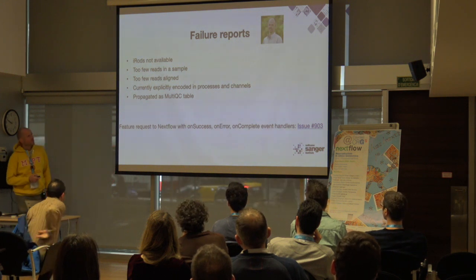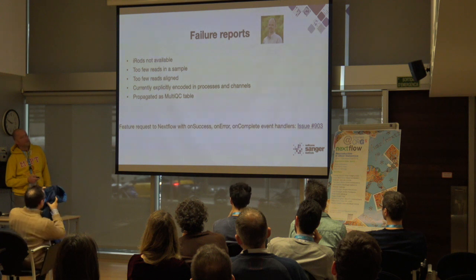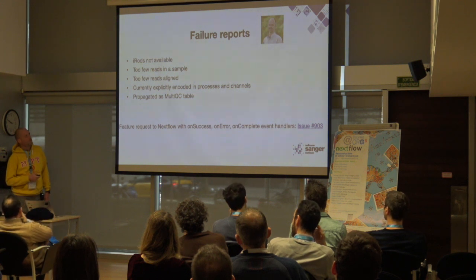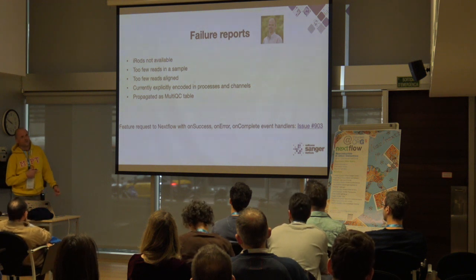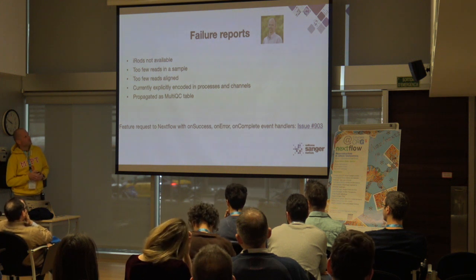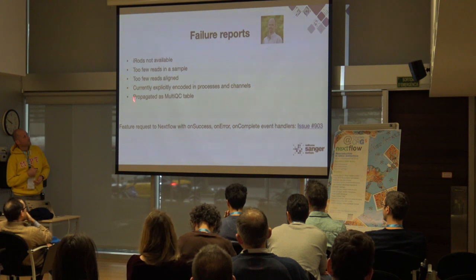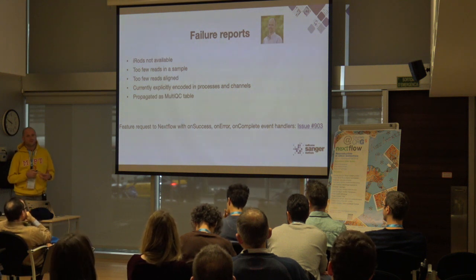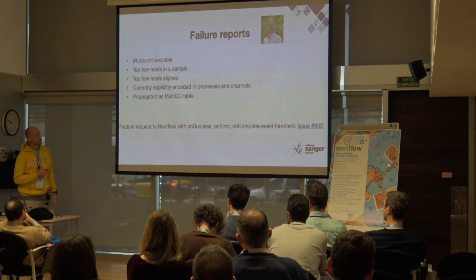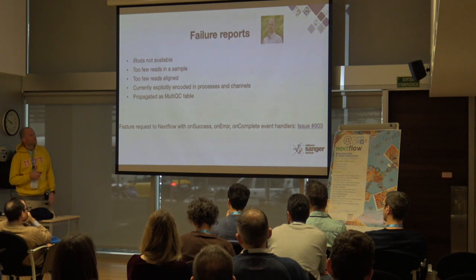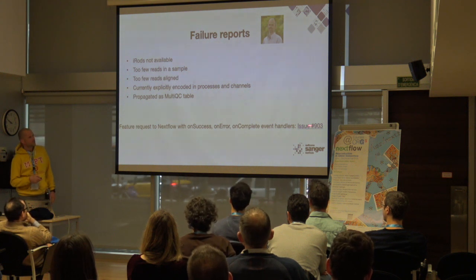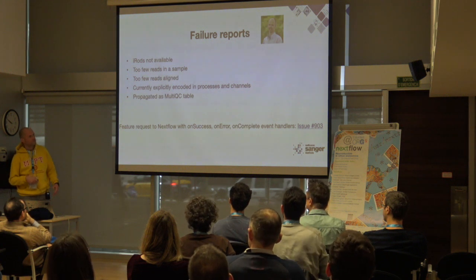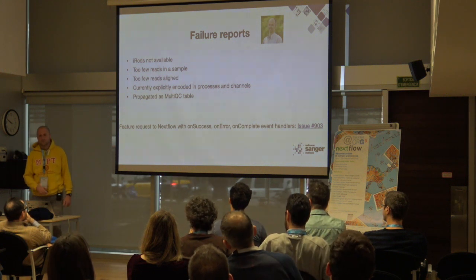Steyn also developed additional steps for failure reports. Our pipelines now report more information about what's happening — on failure, you will see which samples failed, what happened, and what went wrong. This is quite useful because in the original RNA-seq pipeline, we didn't have this information and had to figure out if some samples disappeared completely. Steyn opened an issue on NextFlow's GitHub to add this as a feature to report additionally.